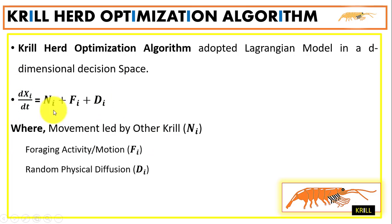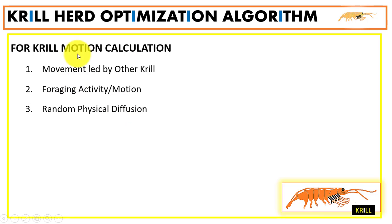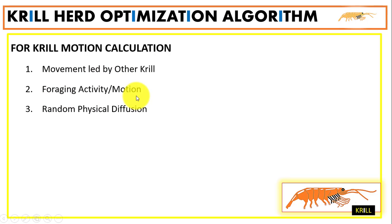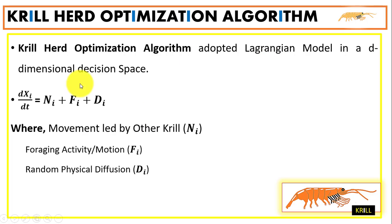Motion calculation uses three operations: the movement of krills led by other krills, foraging activity or motion, and physical diffusion — which is the net movement. For this we use the Lagrangian model, and you can see the equation used to compute the motion of the krills.